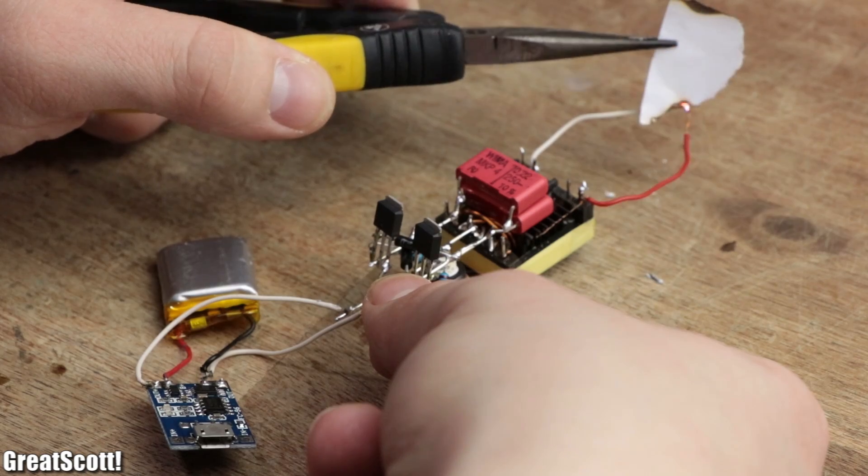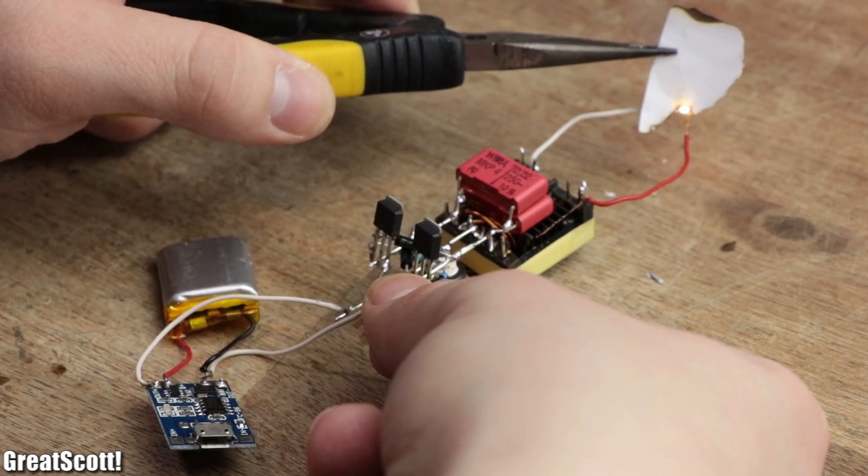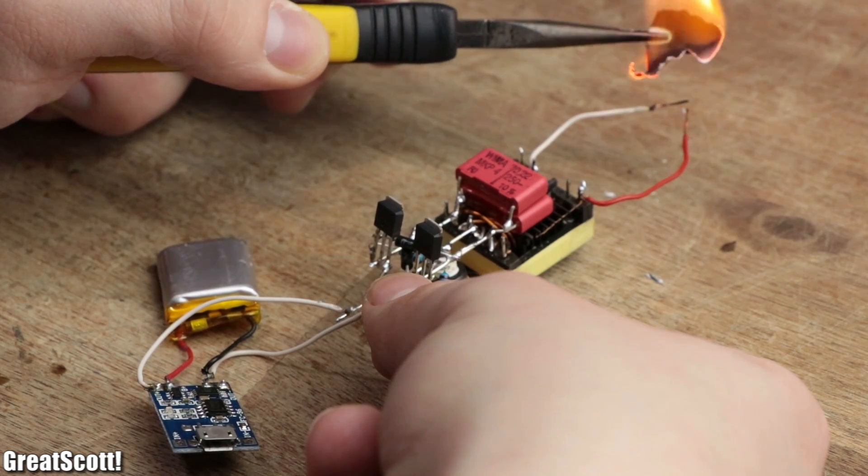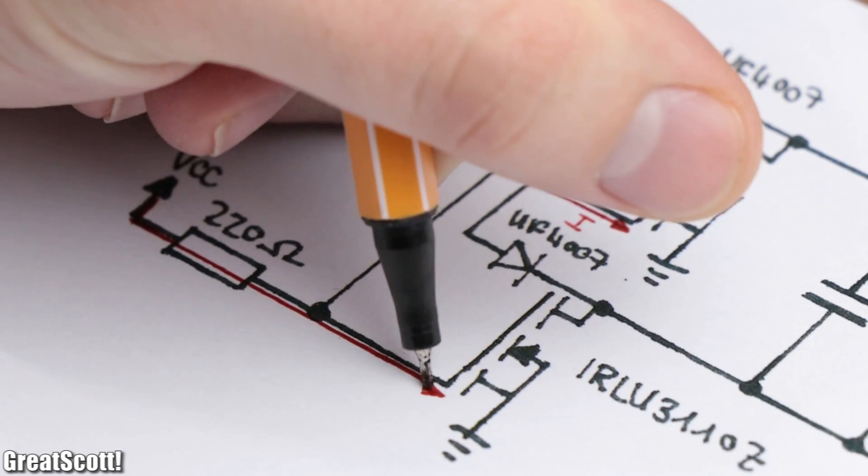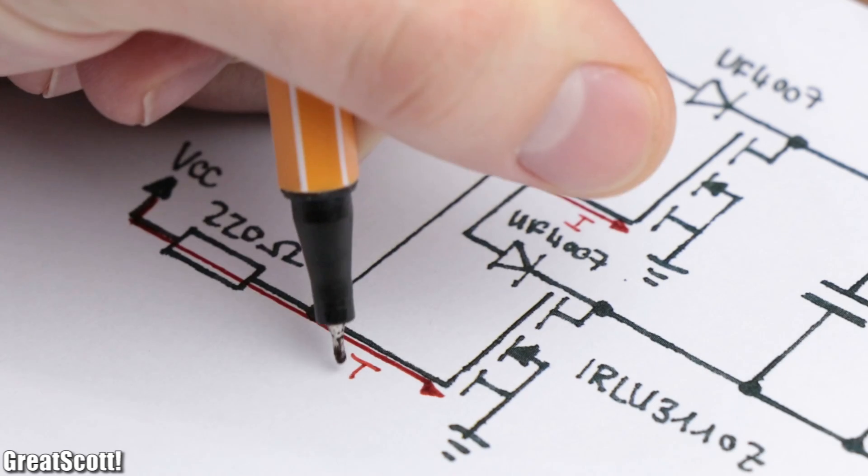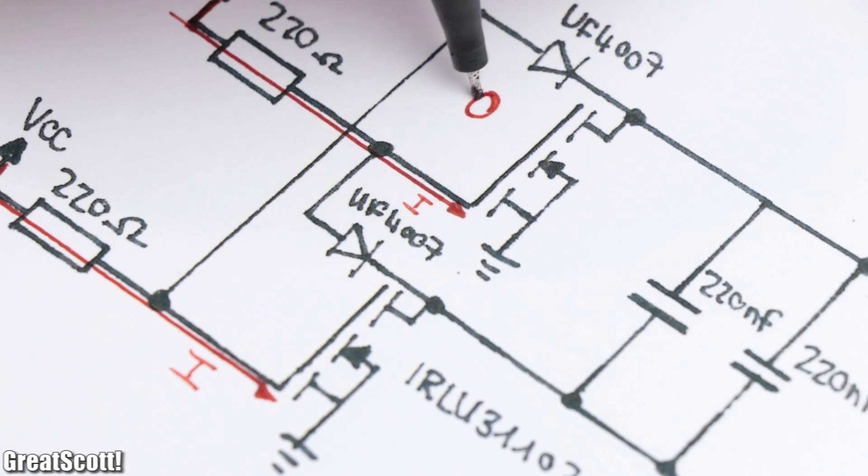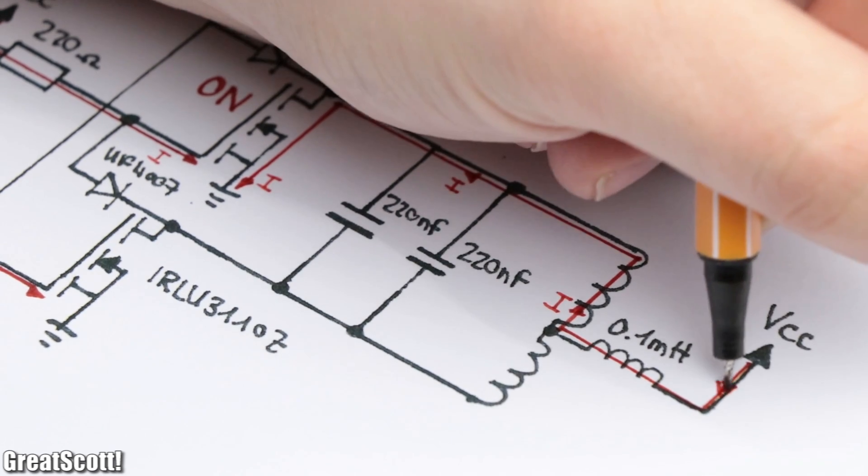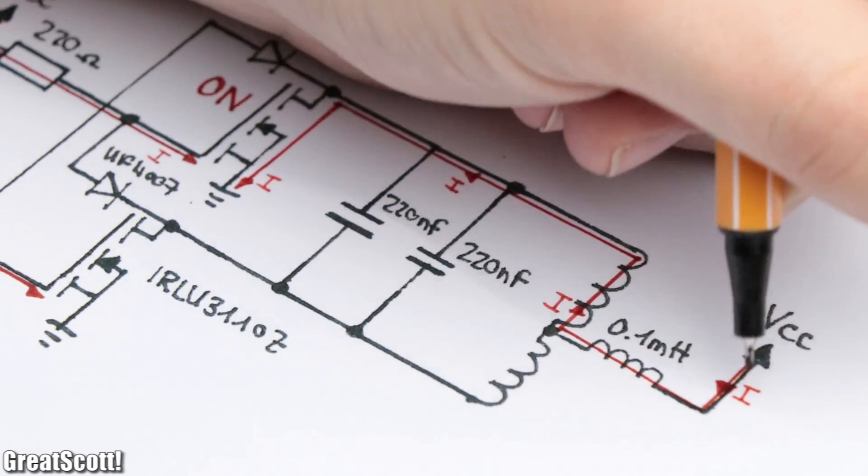Well, first off, the resistors charge up the gate of the MOSFETs. Since no two MOSFETs are completely the same, one of them will turn on first, and connect one half of the primary to ground, and thus a rising current will flow. While that is happening, the gate of the other MOSFET is connected to ground through the first MOSFET, and thus cannot turn on.